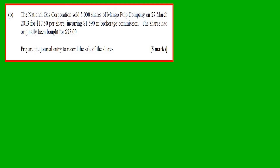Part B: The National Gas Corporation sold 5,000 shares of Mango Pulp Company on 27th March 2013 for $17.50 per share, including $1,590 in brokerage commission. The shares were originally bought for $28. Prepare the journal entry to record the sale of the shares.